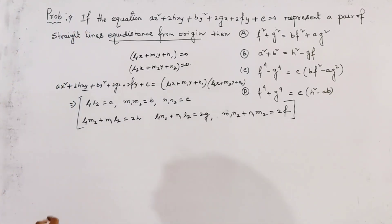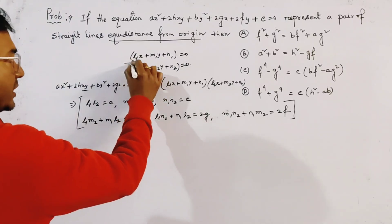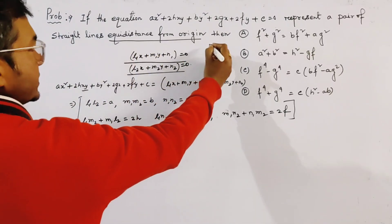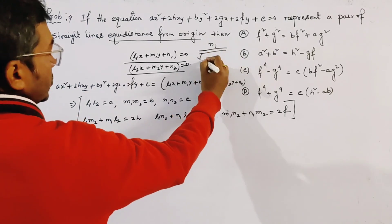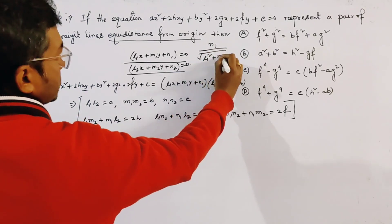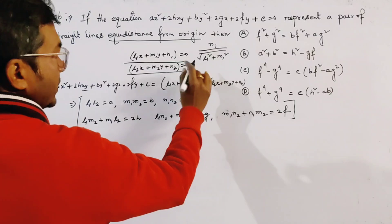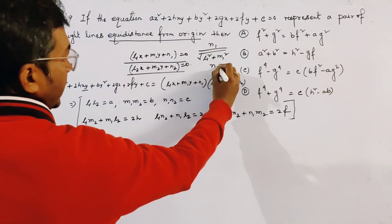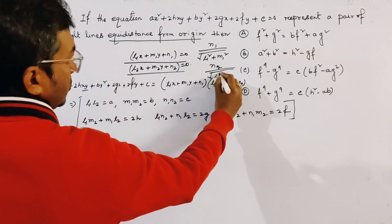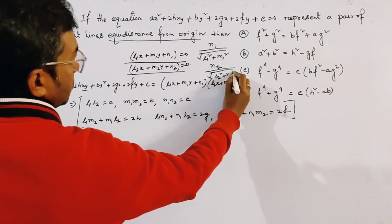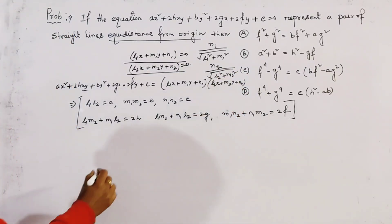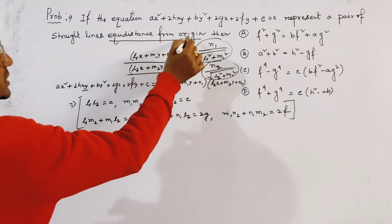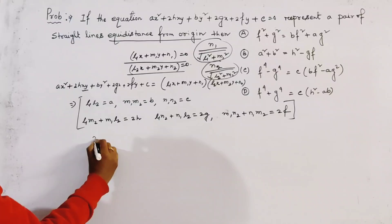Now, the distance of the first line from the origin is N1 divided by root of (L1 squared plus M1 squared), and the distance of the second line from the origin is N2 divided by root of (L2 squared plus M2 squared). From the given condition, these two distances are equal because it is said that they are equidistant from the origin.